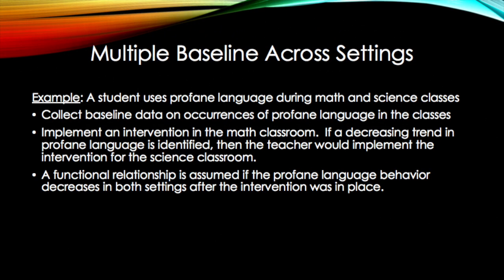An example of a multiple baseline across settings is a student using profane language during math and science classes. After collecting baseline data, the intervention is applied to the math classroom and then to the science classroom. If the use of profane language decreases in both settings after the intervention was in place, this shows a functional relationship.